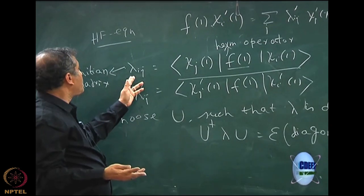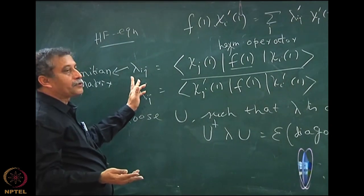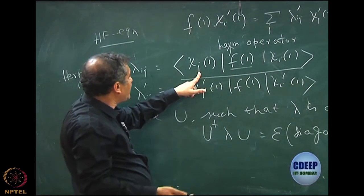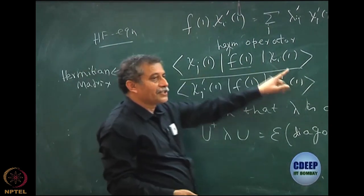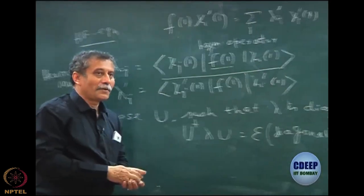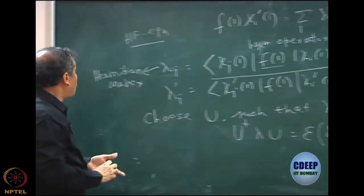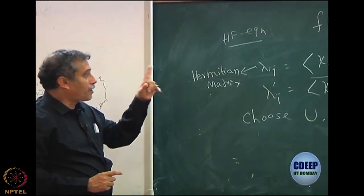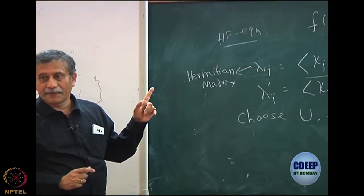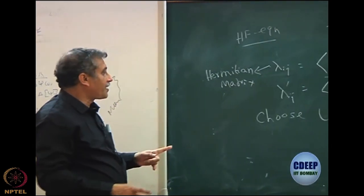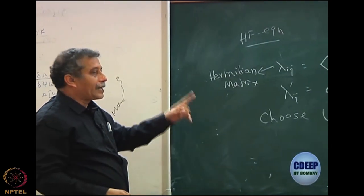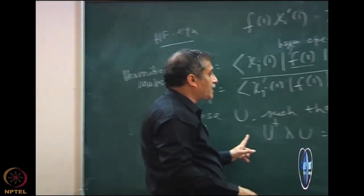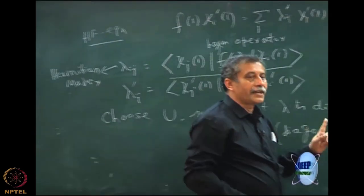That is the reason it is sometimes convenient to look at the j,i ordering, because then you will see j is on the left and i is on the right. The point is that lambda is a Hermitian matrix because the Fock operator is Hermitian. Since it is a Hermitian matrix, I can always find a unitary transformation such that the matrix can be diagonalized.